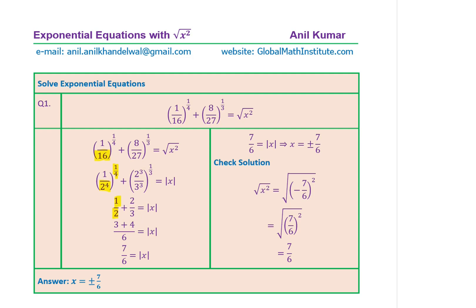In the case of eight over 27 to the power of one over three: we know 8 is 2 cubed and 27 is 3 cubed, so replace eight over 27 with 2 cubed over 3 cubed, then take the cube root to get two over three. The square root of x squared is the absolute value of x, so write it as the absolute value of x.